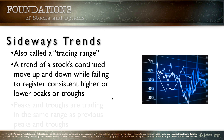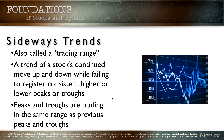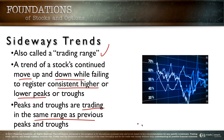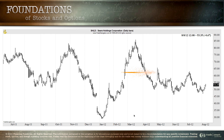Now let's talk about the sideways trend. The sideways trend is when you've got your peaks and your valleys that are matching. This is also called a trading range, and the idea here is that the trend of the stock continues to move up and down while failing to register consistent higher highs or lower lows. In other words, it's stuck — it isn't going anywhere, or maybe it's moving very, very slowly. In the sideways move, the peaks and valleys are roughly going to be in the same range as the previous peaks and valleys.